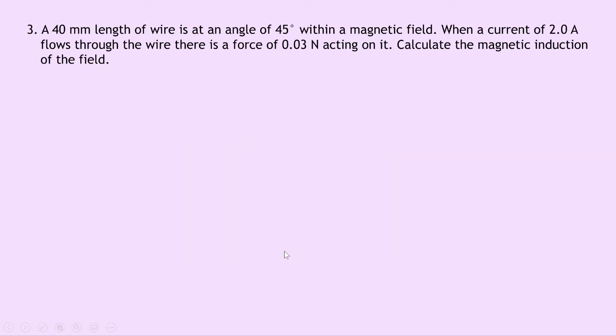Lastly question 3 says a 40 millimeter length of wire is at an angle of 45 degrees within a magnetic field. When a current of 2 amps flows through the wire there is a force of 0.03 newtons acting on it. Calculate the magnetic induction of the field.